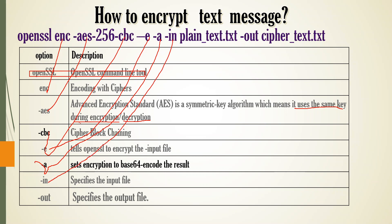Minus in specifies the input file. In the input file, you can give any text file name that you want to encrypt. Minus out specifies the output file name — this is your cipher text output file name.